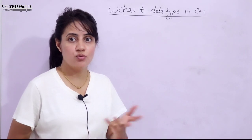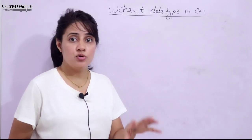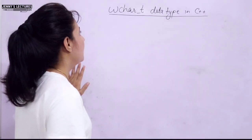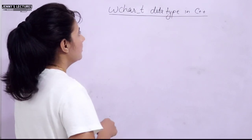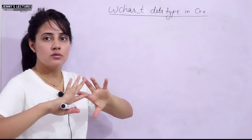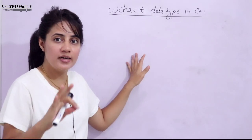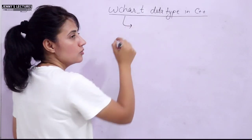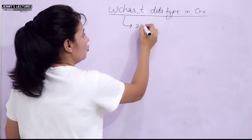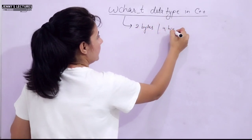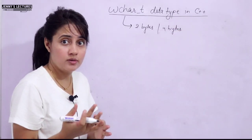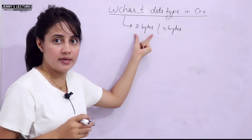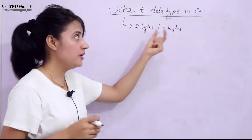All relevant links and details will be in the description box of this video. Now let's look at wchar_t — the wide character data type in C++. It is used to store wide characters. The key difference is that char takes one byte, while wchar_t takes two or four bytes depending on the compiler. On my machine it takes two bytes — I'll show you how to calculate the size.